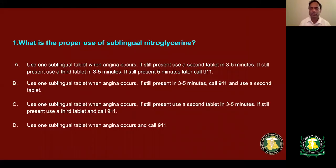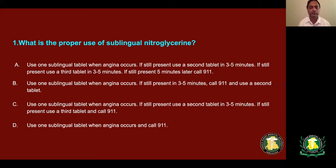Quick review questions. What is the proper use of sublingual nitroglycerin? Use one sublingual nitroglycerin when chest pain occurs; if still present, use a second tablet within five minutes, and a third tablet within another three to five minutes. If pain is still present five minutes after the third tablet, go to the emergency room. The answer is A — sublingual nitroglycerin every five minutes times three; if 20 minutes have passed and pain persists, the patient should go to the emergency room for immediate evaluation.